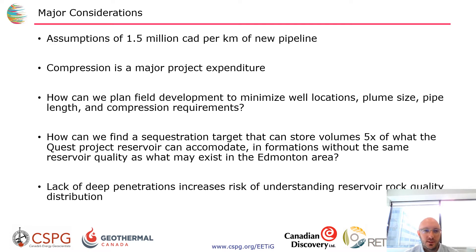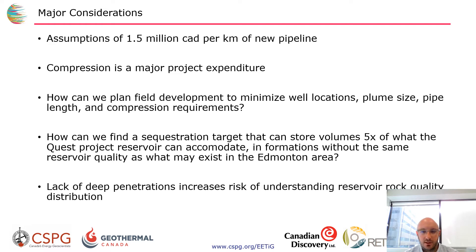Our front-end assumptions include a back-of-the-napkin cost of $1.5 million Canadian per kilometer of new pipeline, so we're trying to find sequestration targets with the shortest pipeline routes from major emission facilities. That ties directly to compression — short, simple pipe has clear economic benefits. We want to minimize well locations, plume size, and facility design considerations. The key challenge is finding a sequestration target that can store up to five times the volume of Quest in areas where reservoir quality may not be as good.